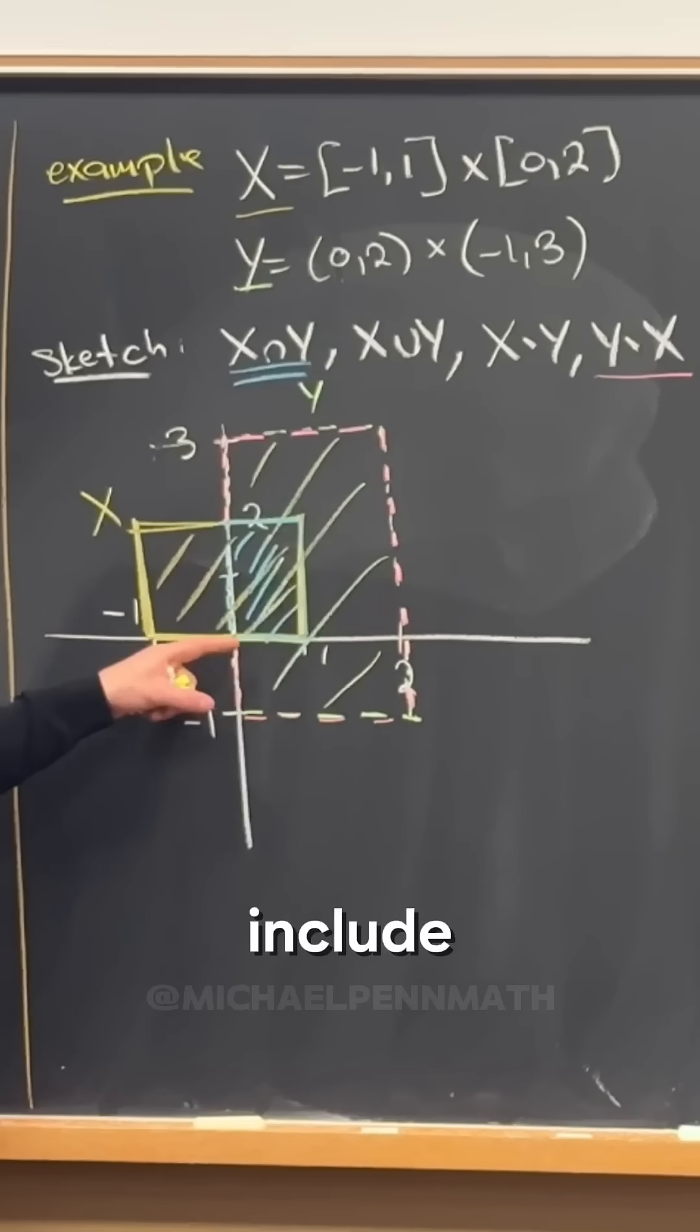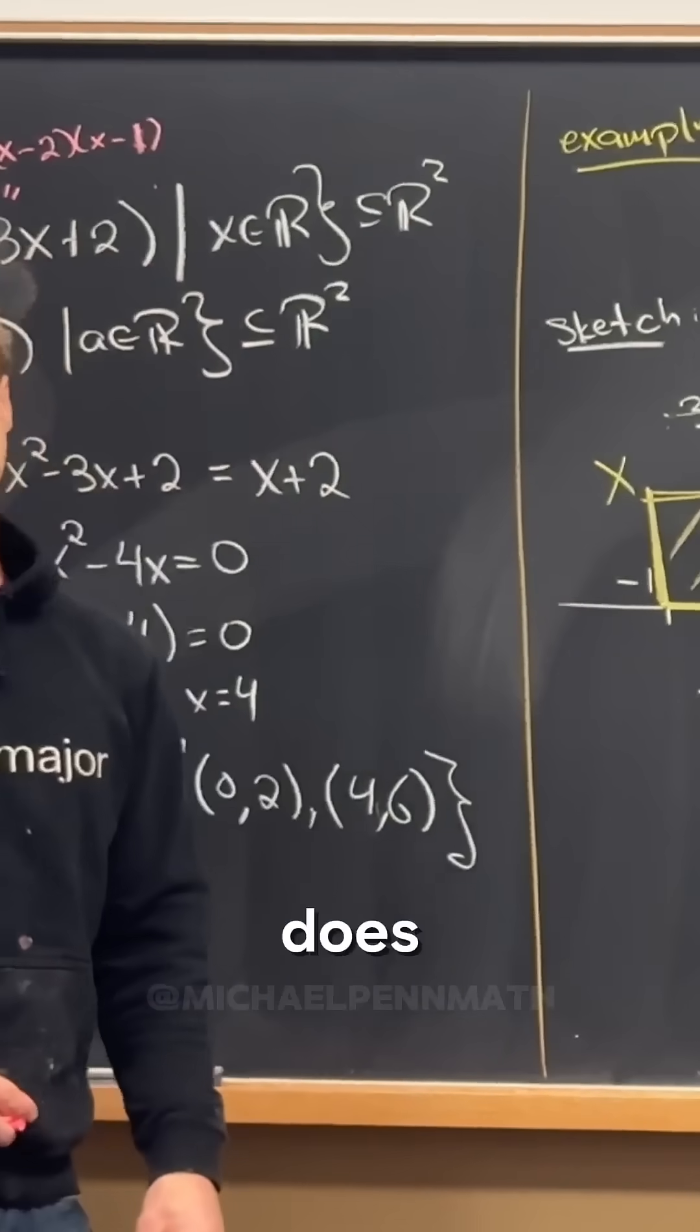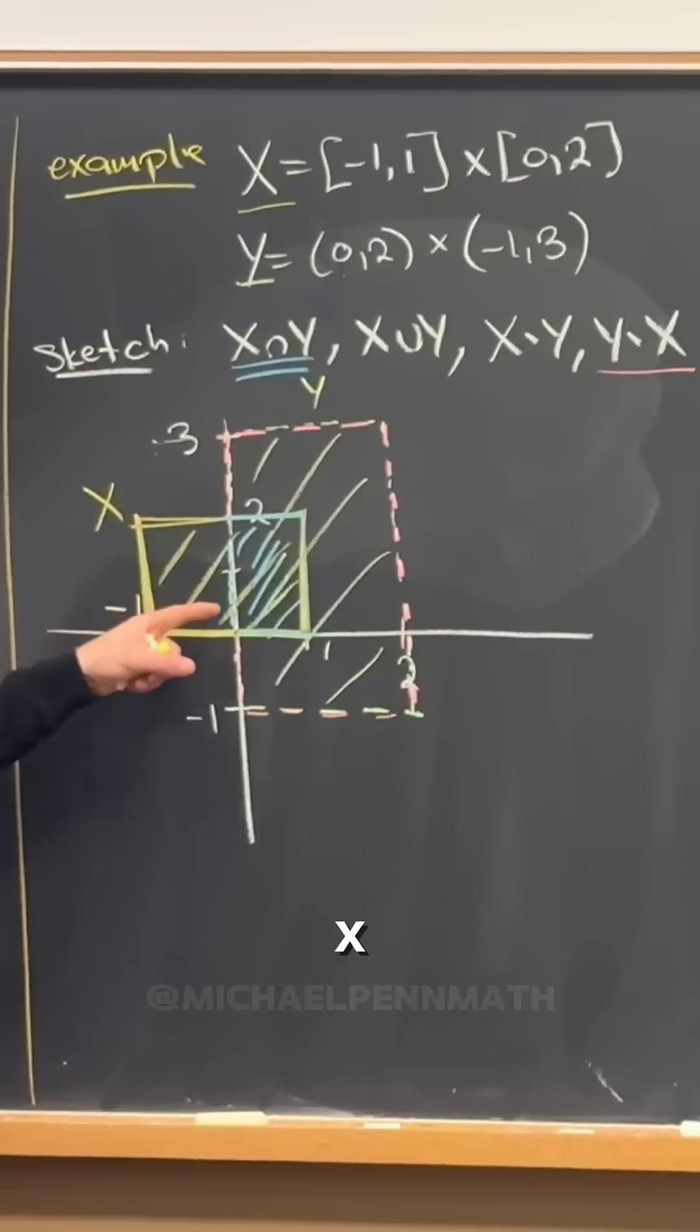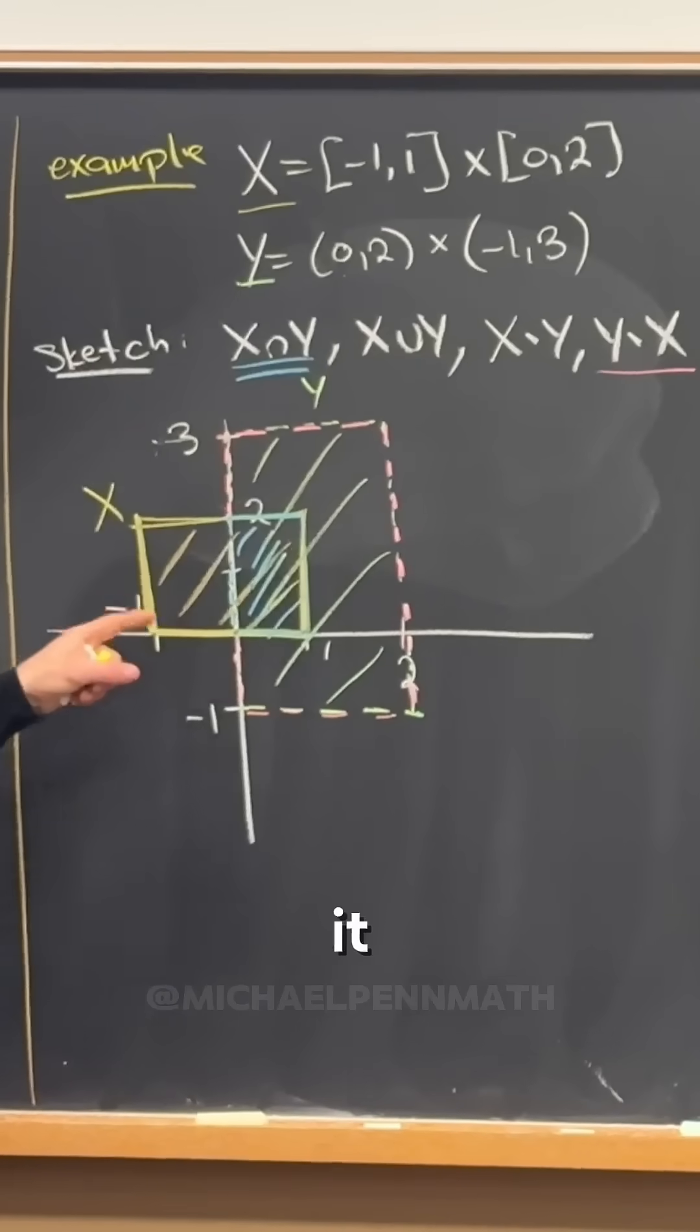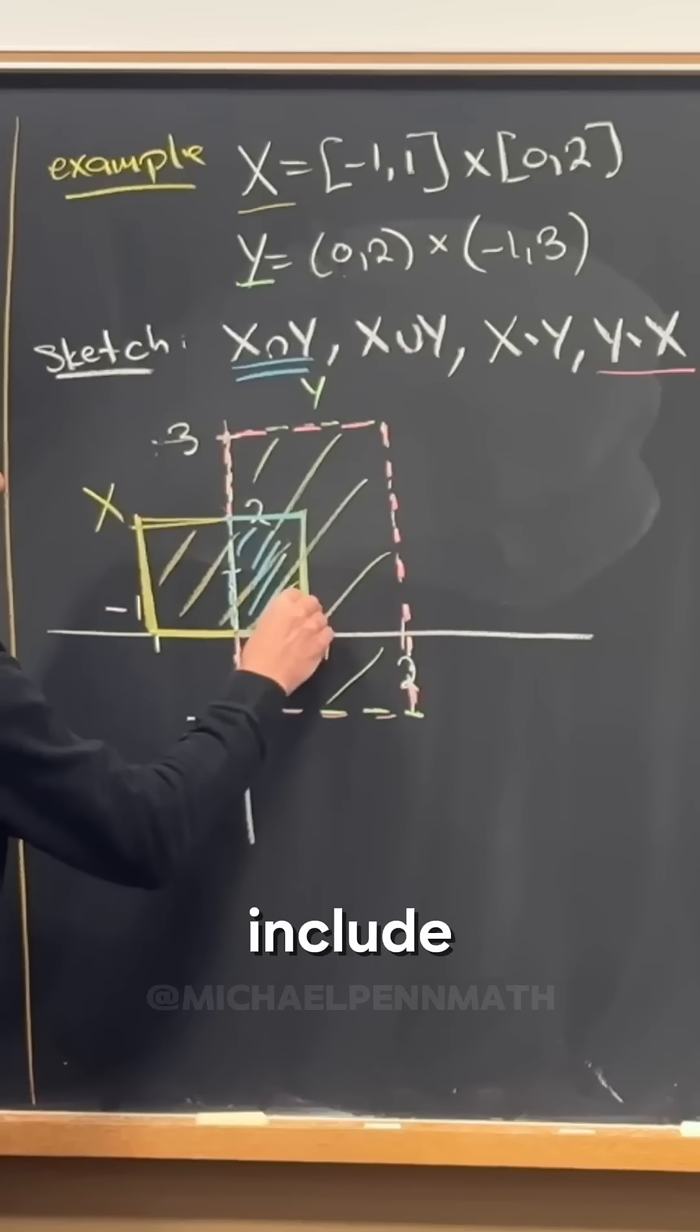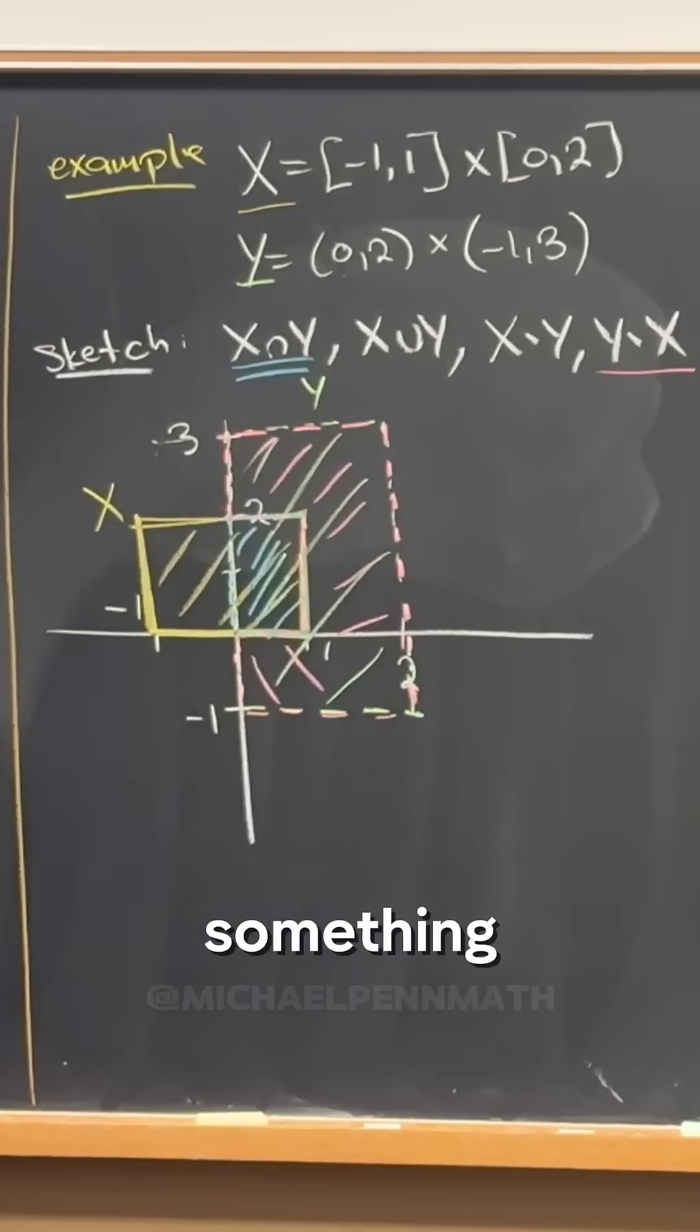And then does it include this stuff right here? It does. Because X does include these line segments. So since X does include it, we're taking away X. Y minus X does not include it. So we got something like that.